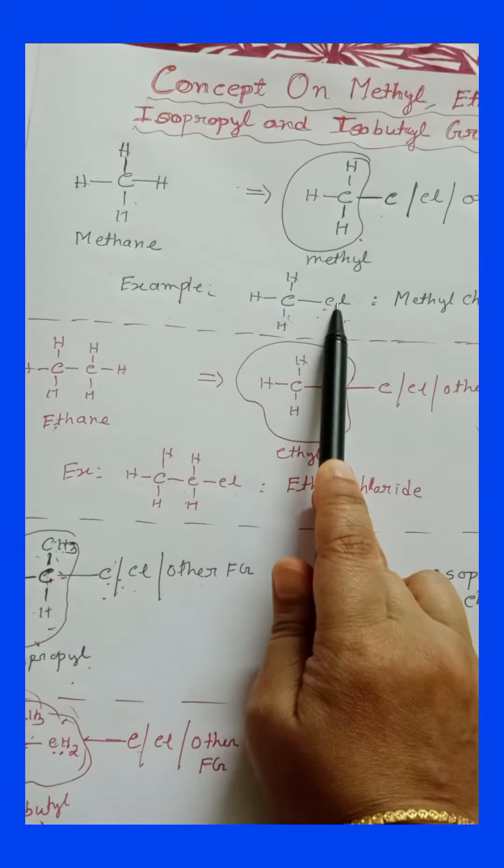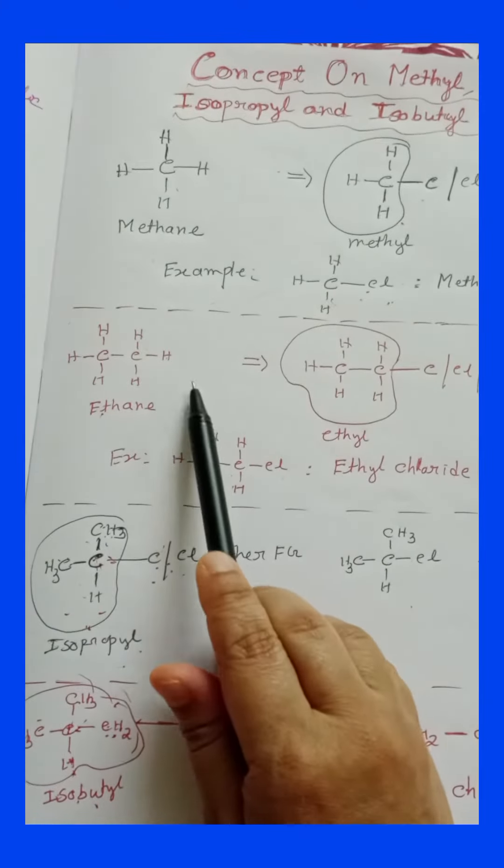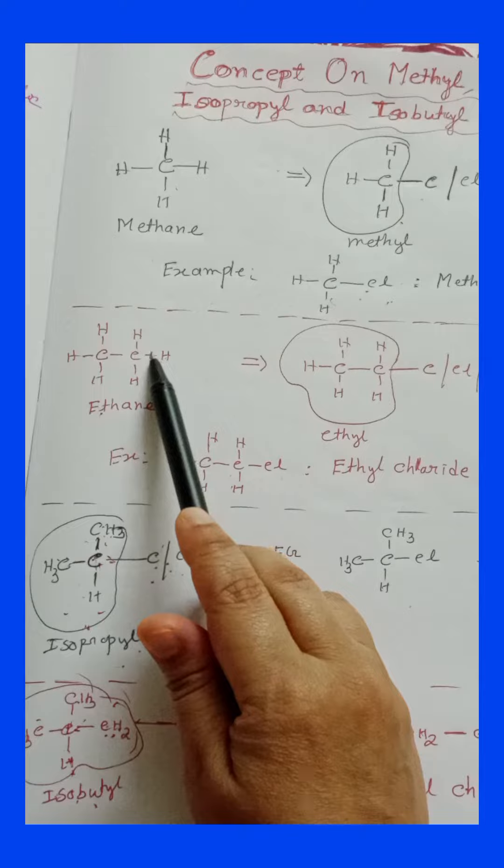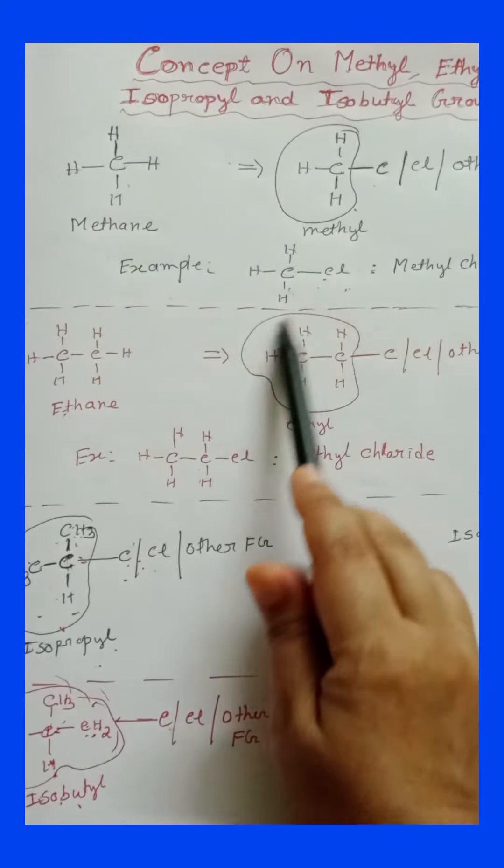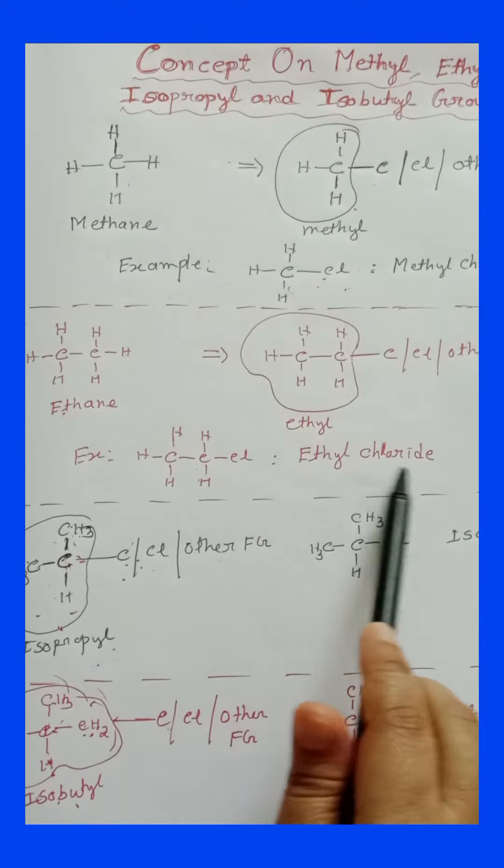Here you can see one hydrogen is replaced with chlorine. Similarly, ethane. When one hydrogen in ethane is replaced with carbon, halogens, or other functional groups, it's called ethyl. An example is ethyl chloride.